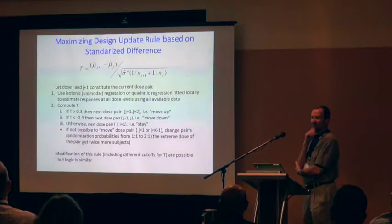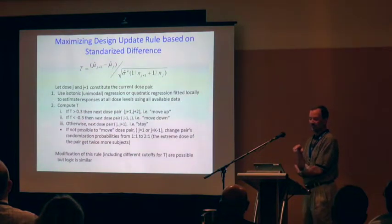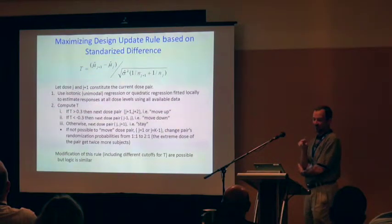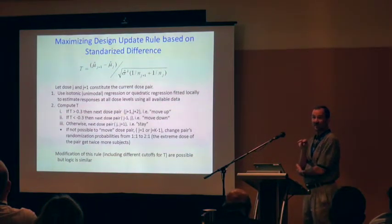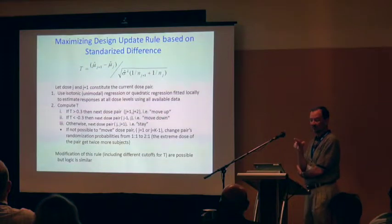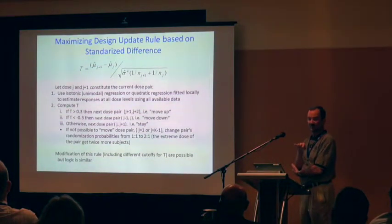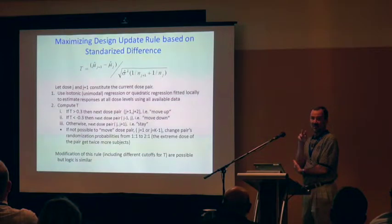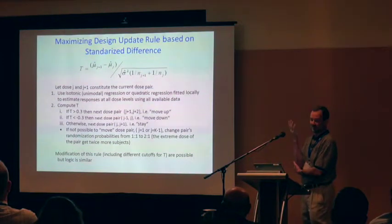Instead of just positive and negative slopes, it uses a T-statistic. If the T-statistic falls in a narrow range, like between minus 0.3 and plus 0.3, then you could stay at the same two doses. If you shrink that window to zero, it's like an up-and-down, oscillating between pairs of doses centered around the maximum. That will pretty much ensure you have the maximum number of subjects at the maximum dose, because part of the time it will be the higher of the two doses and the other part the lower.